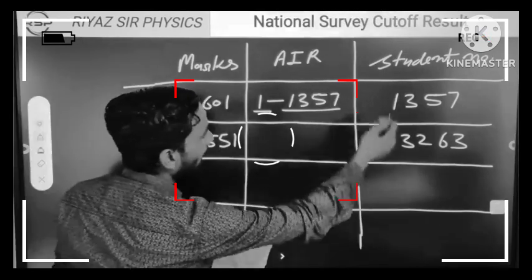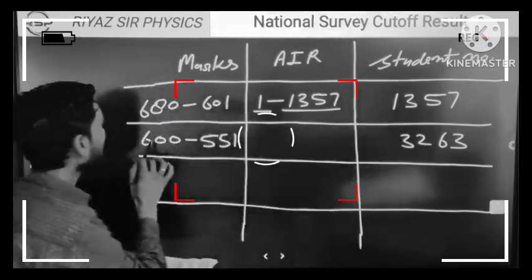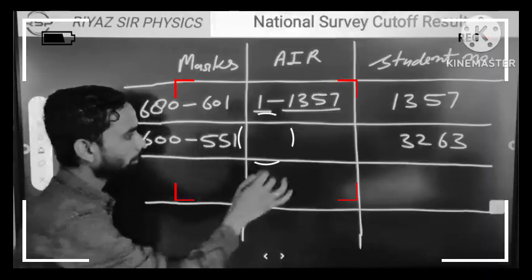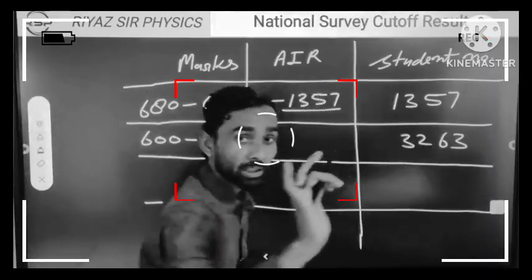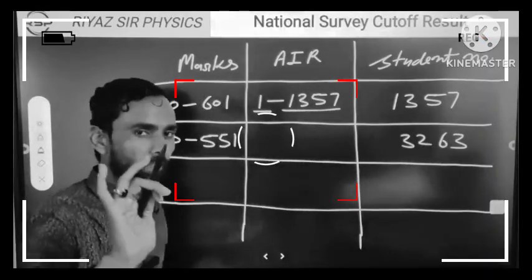Let's see how many students we got here. How many students did we get from 600 to 651? We got 3263 students here at the All India level.